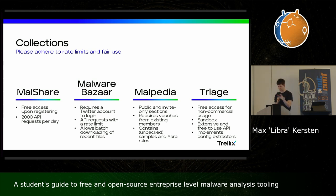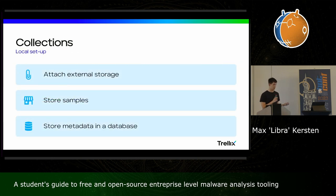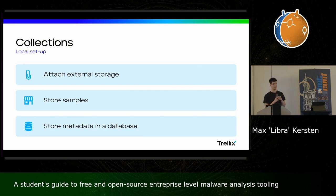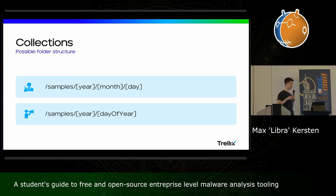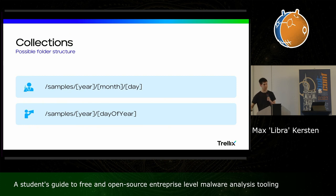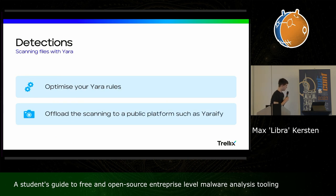Combining all this, you have your local setup: attach external storage or use a large SD card in your Raspberry Pi to store samples, and store your metadata in a database so you don't need to query the API every time. Use a folder structure — for example year, month, and day — so you know when you fetched something and can easily delete old data. With a 60-day retention period, you just delete the corresponding folder.